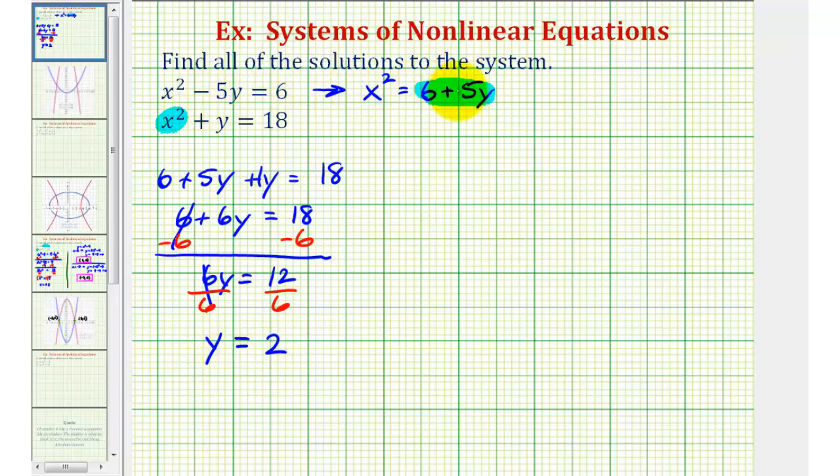Let's use this form of the first equation that's already solved for x squared. Using x squared equals six plus five y, we'll substitute two for y, and then solve for x.